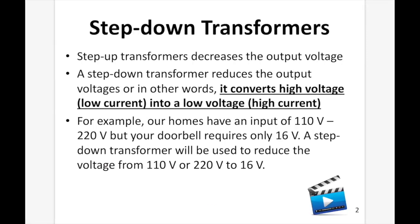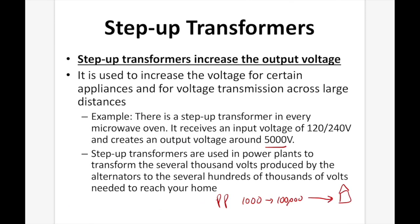Step down transformers, as the name implies, decrease the output voltage. A step down transformer reduces the output voltage — it converts high voltage (low current) into low voltage (high current). For example, our homes have an input voltage of 110 to 220 volts, but your doorbell only requires 16 volts, so a step down transformer reduces it accordingly. It's also important during transmission from the power station to your house, where the transmission lines carry a hundred thousand volts that must be stepped down to 110 volts for home use.